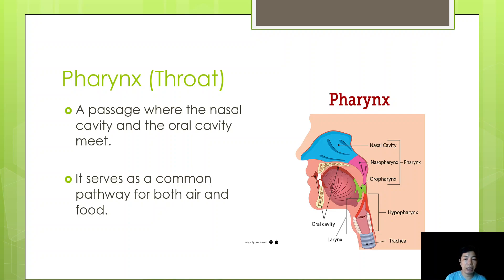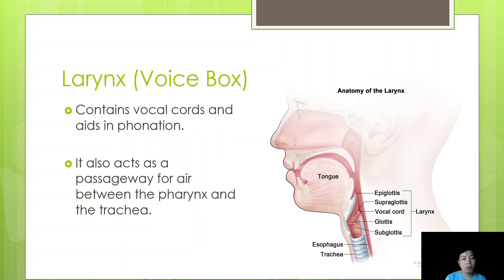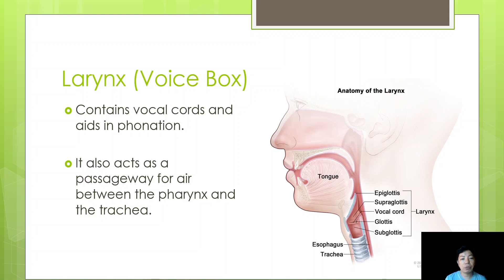The voice box, or larynx, contains the vocal cords and aids in phonation. It is not primarily responsible for respiration, but it is still considered part of the respiratory system because air passes through it. The primary purpose of the larynx is phonation — the production of sounds that allow us to speak.